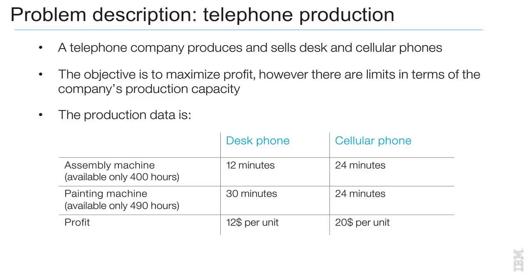The production data is shown in the table. A desk phone's processing time is 12 minutes on the assembly machine and 30 minutes on the painting machine. A cellular phone's processing time is 24 minutes on the assembly machine and 24 minutes on the painting machine. The assembly machine is available for only 400 hours and the painting machine is available for only 490 hours. Desk phones return a profit of $12 per unit and cellular phones return a profit of $20 per unit.